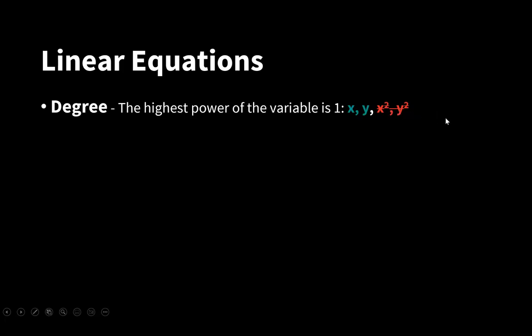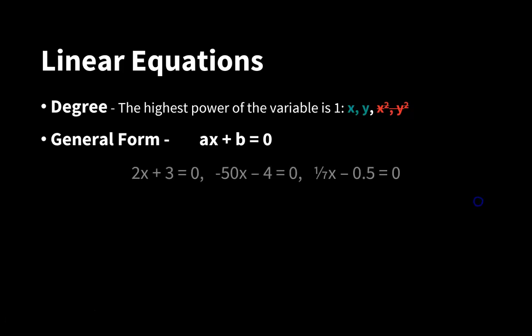x squared and y squared are not. The general form of linear equations is ax plus b equals 0, where a and b are constants, and x is the variable. a is the coefficient of the variable.